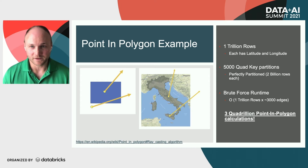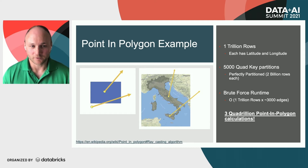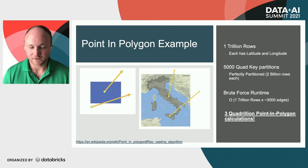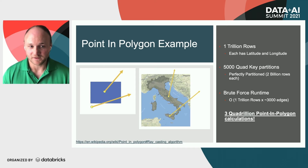To demonstrate the power of this implementation, here's a hypothetical example similar to the types of data sets we work with. We have a table consisting of exactly one trillion rows — a Delta Lake table with 5,000 quad tree partitions, assuming zero skew, so each partition has 2 billion rows. The problem is to find all points within the shape of Italy, which has over 3,000 edges. If we use the brute force approach, we'd need to run the ray casting algorithm for all one trillion rows and 3,000 edges, resulting in approximately three quadrillion point and polygon calculations.